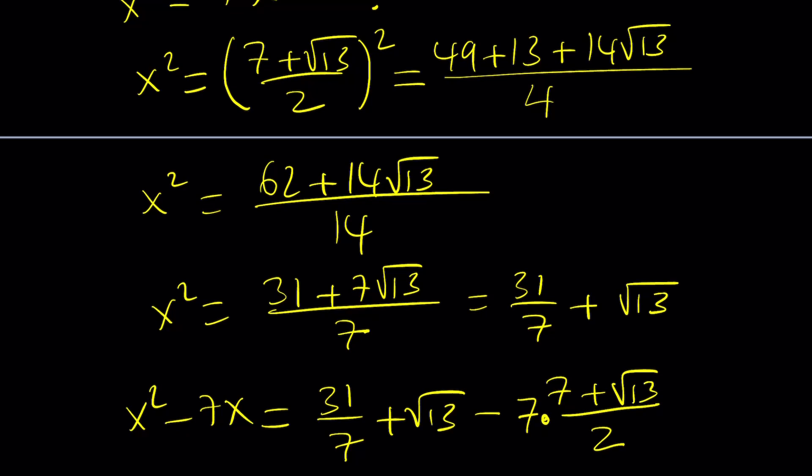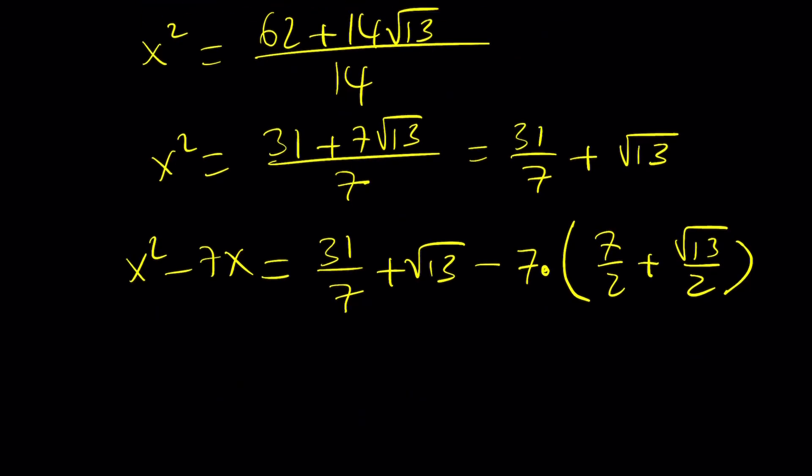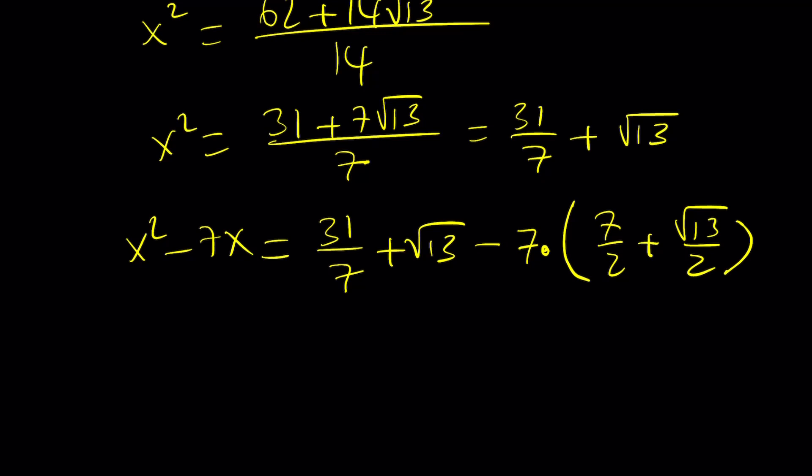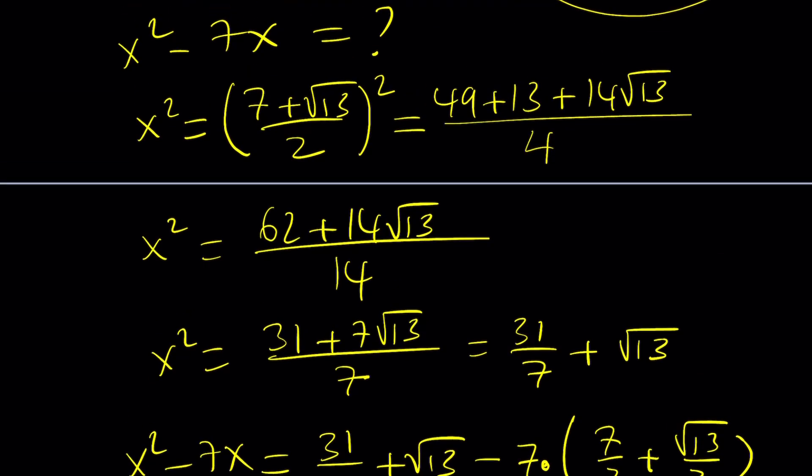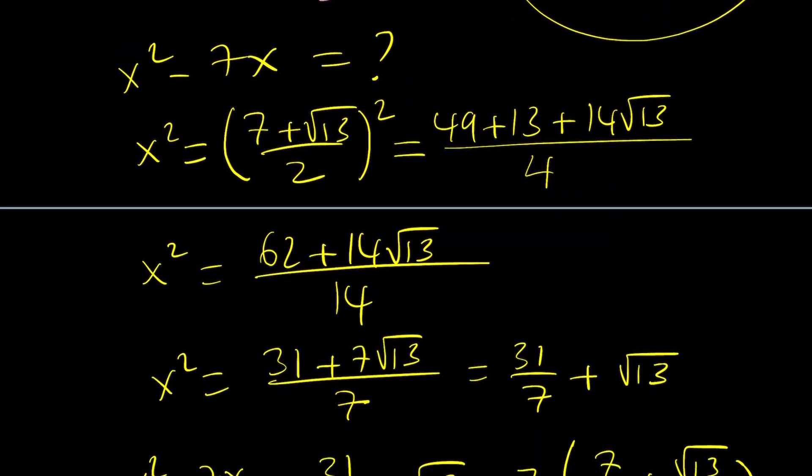Here's what we're going to do. Why don't we just separate this and write it as 7 halves plus root 13 over 2. And then from here, we're going to subtract these. Let me check my work because it looks like I made a mistake.